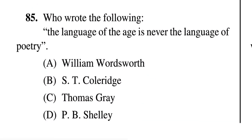Question 85: Who wrote the following — 'The language of the age is never the language of poetry'? When a poet writes a poem, they always try to write in a way that has never been written before. Options: A — William Wordsworth, B — S.T. Coleridge, C — Thomas Gray, D — P.B. Shelley. The correct answer is C — Thomas Gray, who is also a significant poet from England.